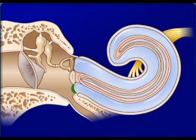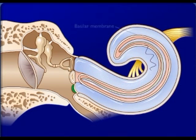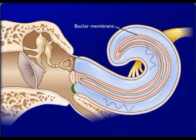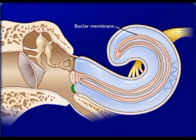Long wavelengths from low-pitched sounds cause displacement of the basilar membrane far from the oval window. This movement is detected by hair cells of the spiral organ, which are not visible in the animation.